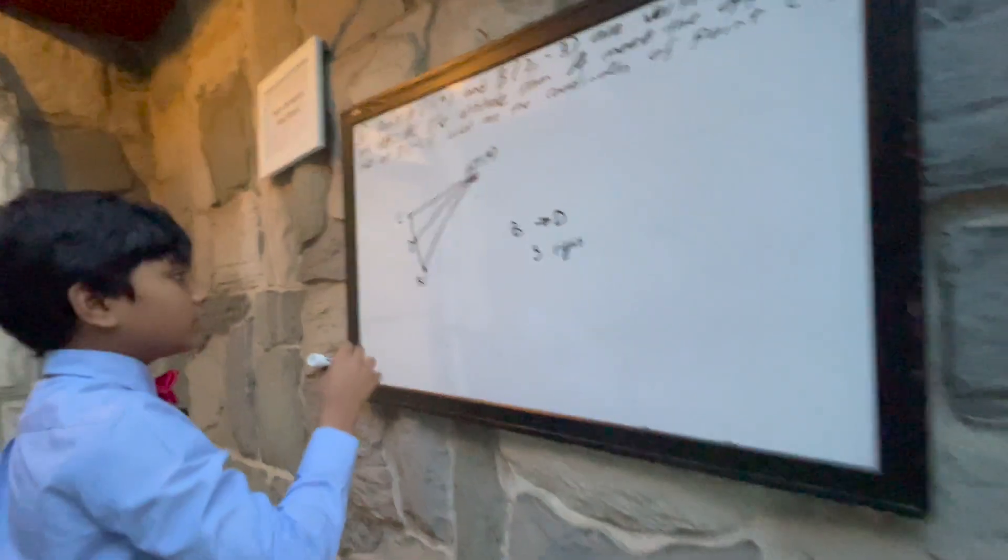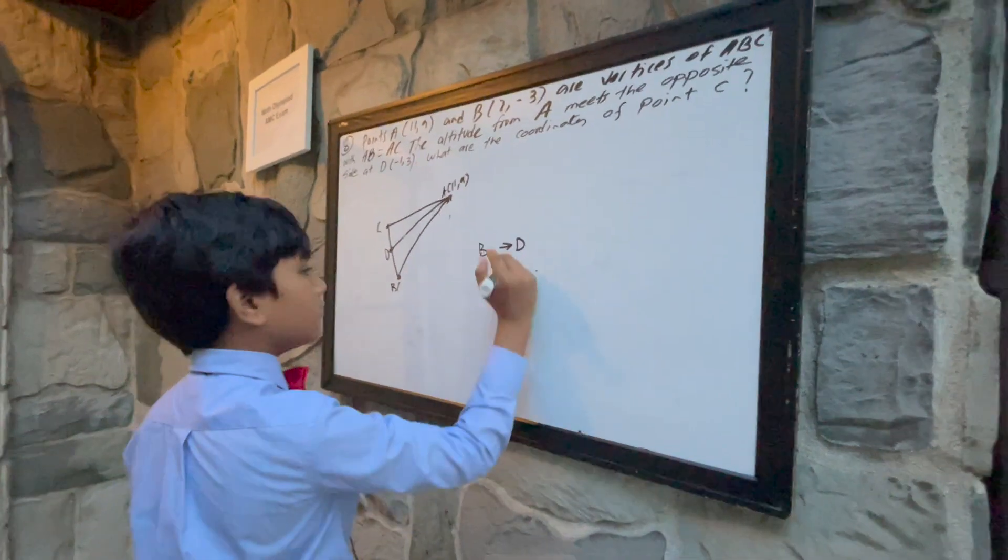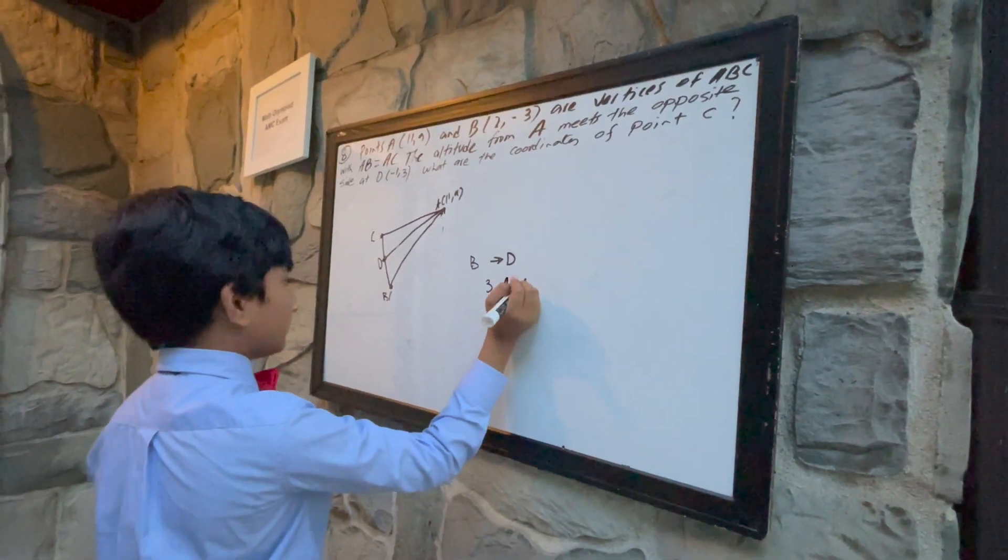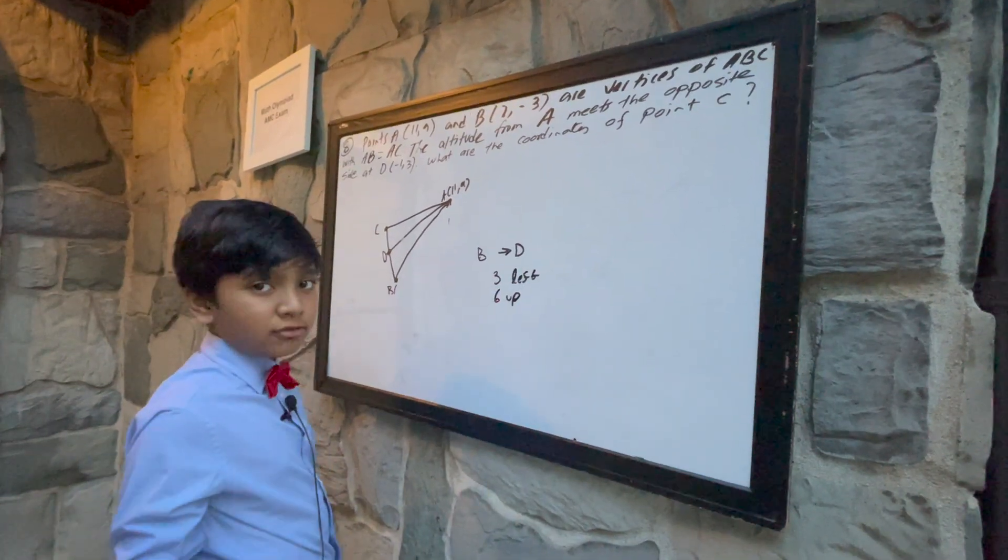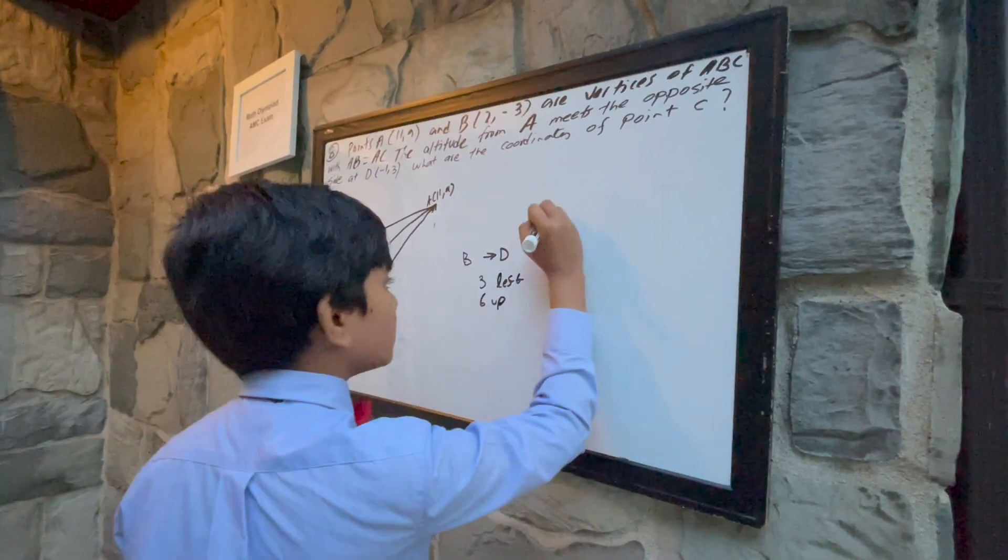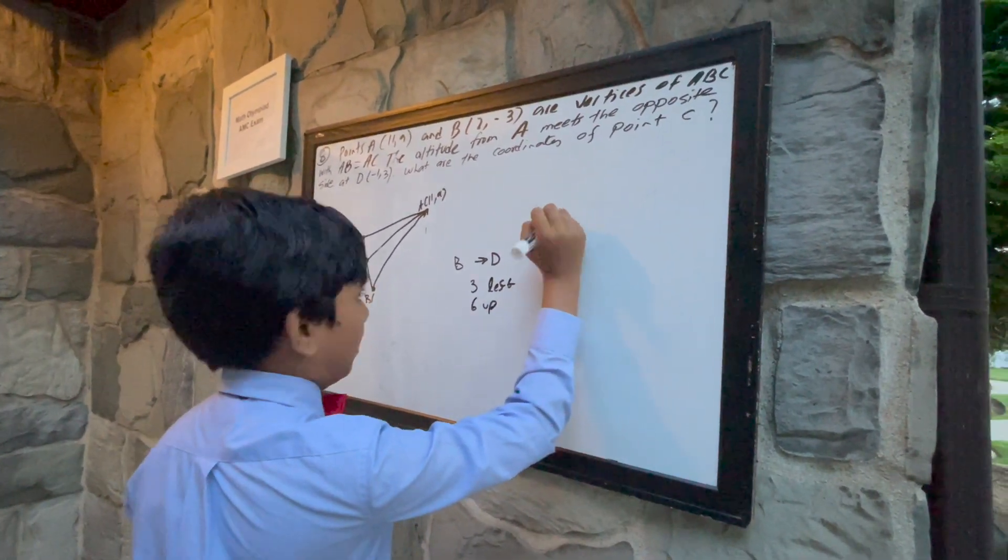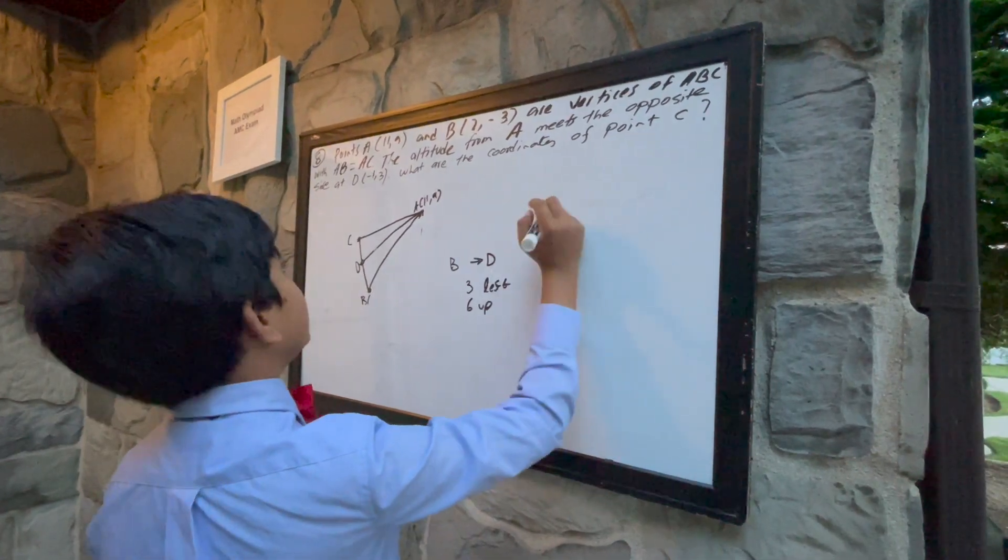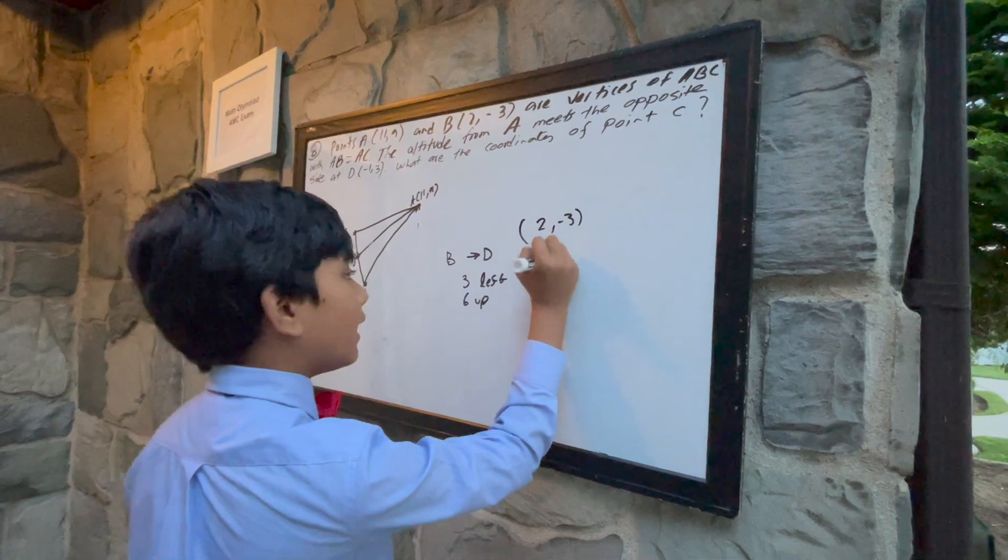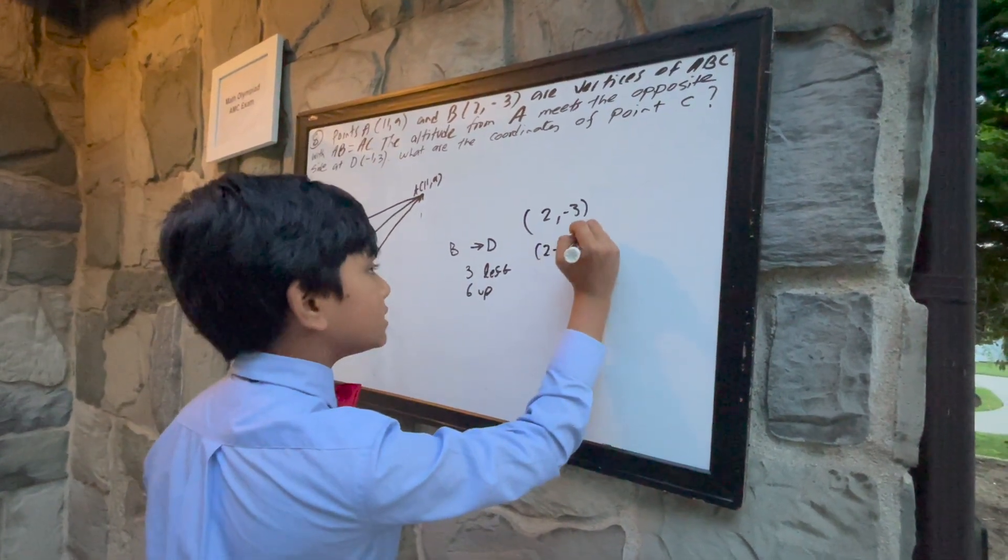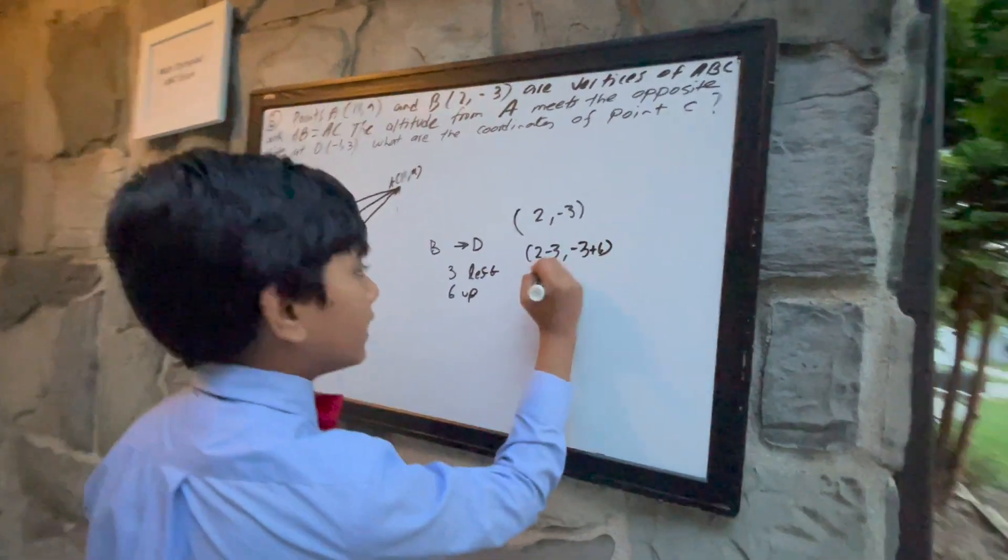And so you have to go 3 to the left and you have to go 6 up, because that's the difference between your coordinates. This is the coordinates of B (2, -3), so if you go 3 to the left and 6 up, you get the coordinates of D.